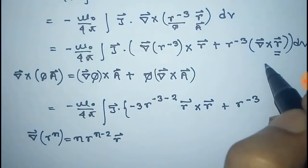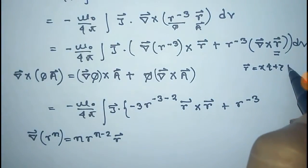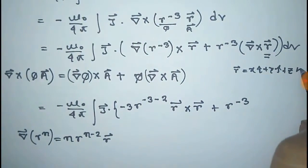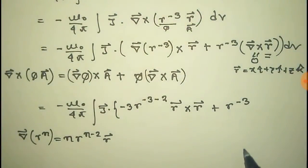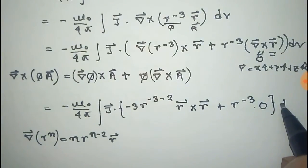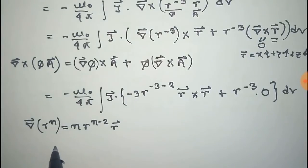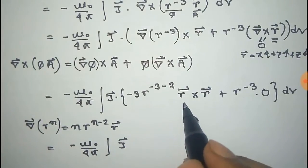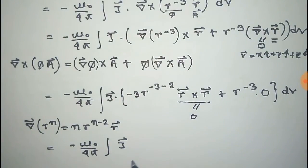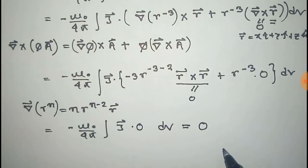The position vector r is given by r equals xi plus yj plus zk. Now, r cross r is always zero because the angle between them is zero, so that term is zero. Thus the total expression vanishes, and we get the divergence of the magnetic field: divergence of B equals zero.